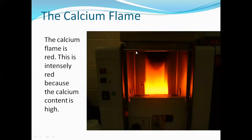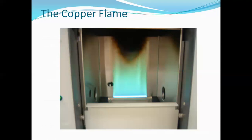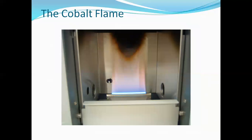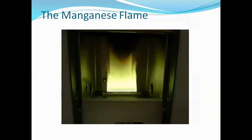Here are the different colors of flames for different elements. The calcium flame is red — intensely red because calcium content is very high. The copper flame is bluish green. The potassium flame is purple, so if a sample contains potassium, a purple flame will be observed. The cobalt and manganese flames produce a greenish-yellow type flame when the sample contains manganese.